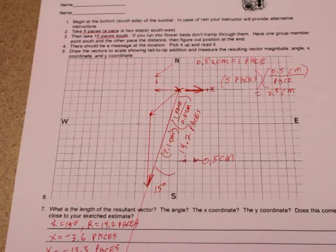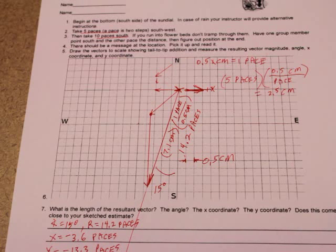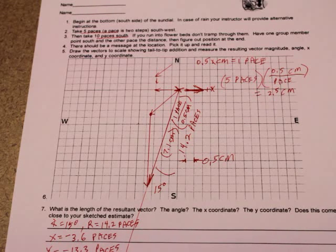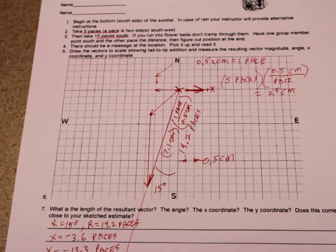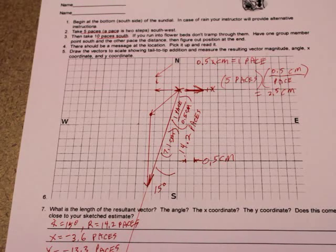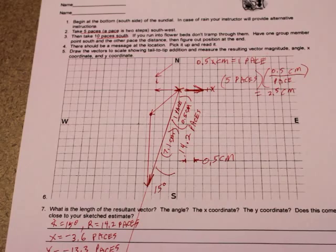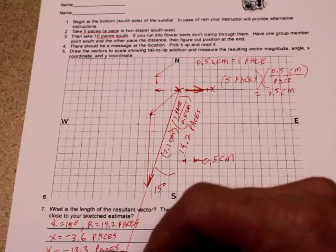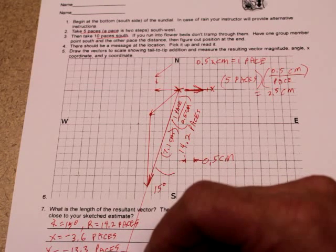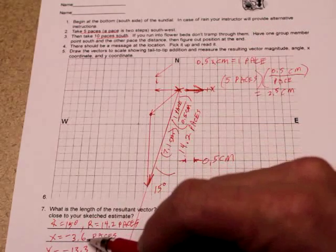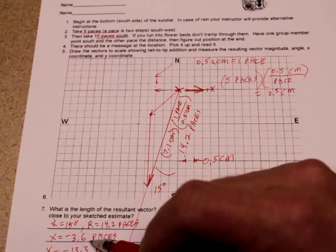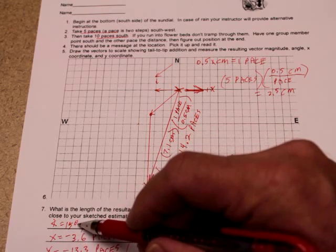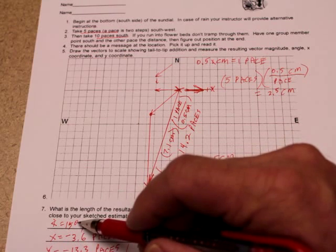Okay, let's figure out what the actual answers were. Get out my handy-dandy calculator over here. So, it was, this is supposed to be 13.5 instead of 13.3. We're really close. This is supposed to be 3.5. We got 3.6. Again, really close. This is, the angle's supposed to be 14.6. We got 15. Very close.